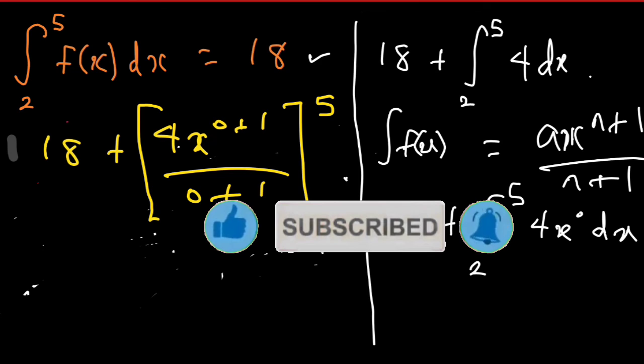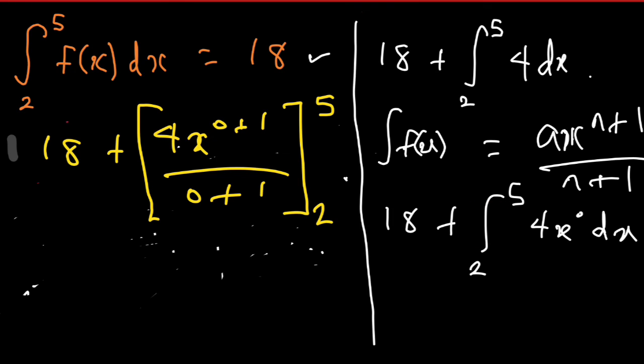Now from here I can easily have 18 plus 4x, so 4 times 0 plus 1 gives 4x.